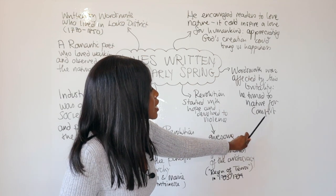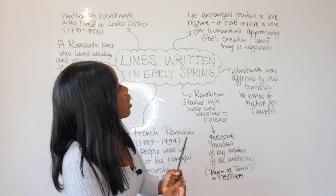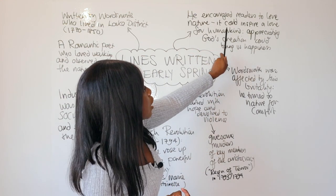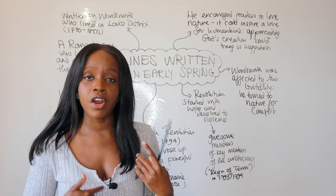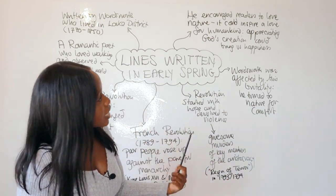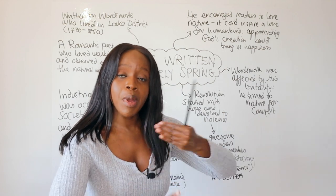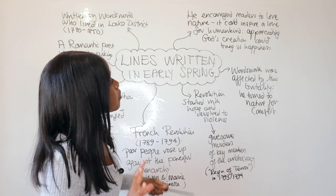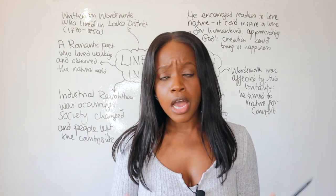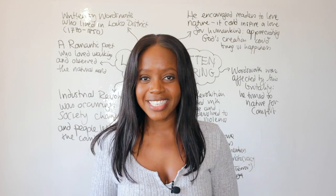Affected by the brutality of the French Revolution, Wordsworth turned to nature for comfort, and this is what is encapsulated in 'Lines Written in Early Spring.' The poem is essentially Wordsworth's encouragement to readers to love nature, because it could inspire a love for humankind rather than the violence and cruelty seen in the French Revolution. He wanted readers to look to nature, and appreciate God's creation, which could also bring happiness. Now that we have a general understanding of the contextual factors, let's move into a line-by-line analysis of the poem.